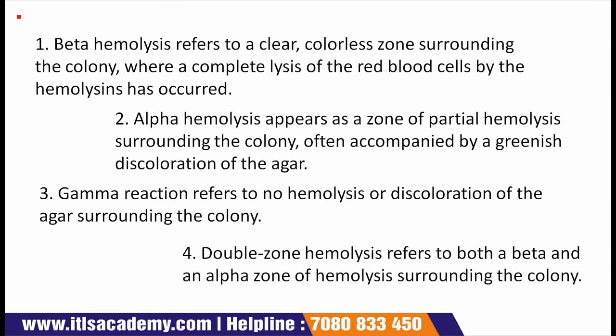In the process of hemolysis, first point is beta hemolysis, which refers to a clear colorless zone surrounding the colony where a complete lysis of the red blood cells by the hemolysin has occurred. This is best seen in subsurface colonies where the agar has been stabbed, since some bacterial hemolysins like streptolysin O are inactivated by oxygen.